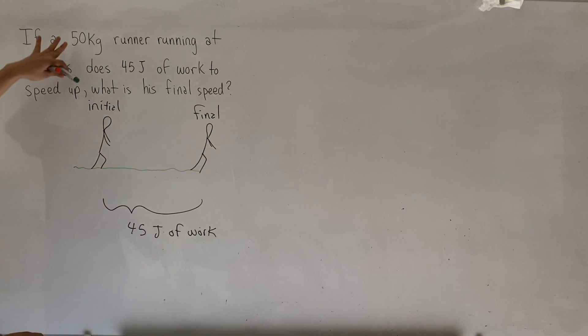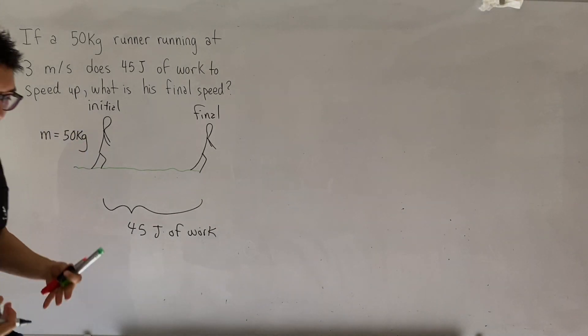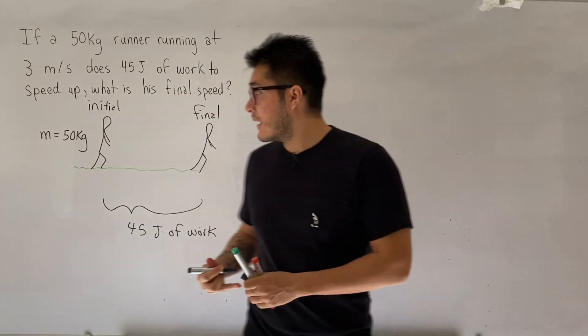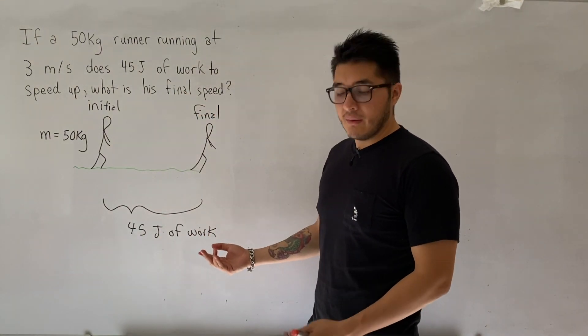And in this case, we also are given the mass of the runner. So the mass is 50 kilograms. All right, so we have a runner, 50 kilograms, and then they do 45 joules of work to speed up.